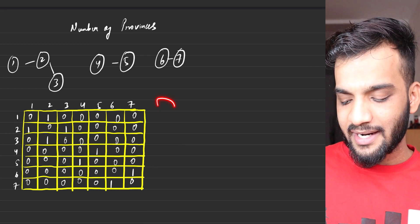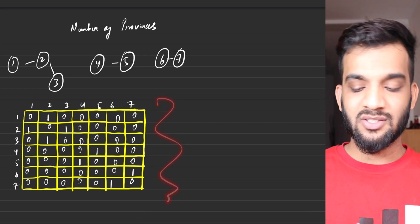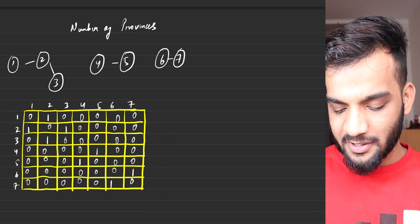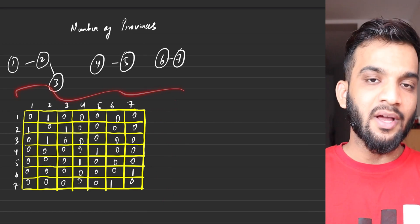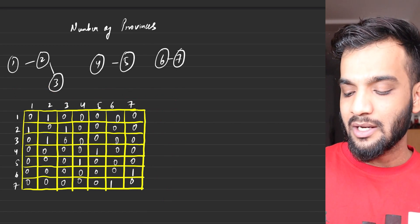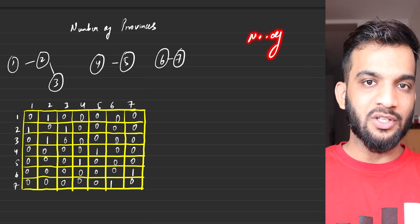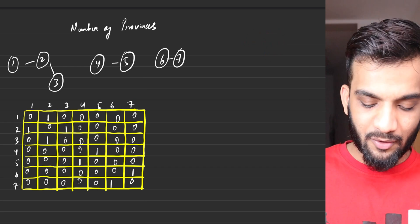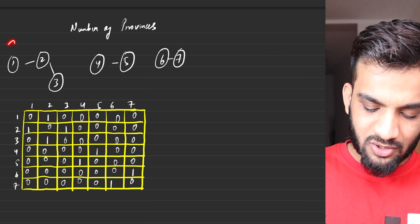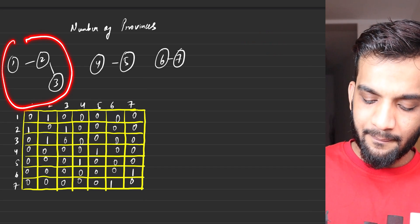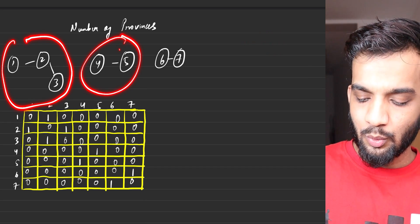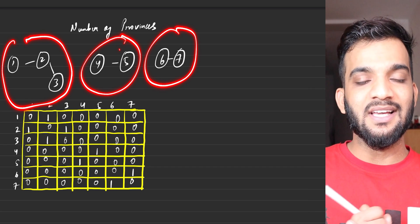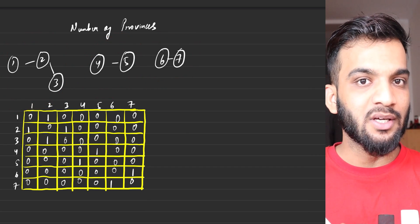So you will be given the adjacency matrix representing a graph, and you have to tell me the number of connected components. So if I ask you the number of connected components, this is 1, this is 2, this is 3.